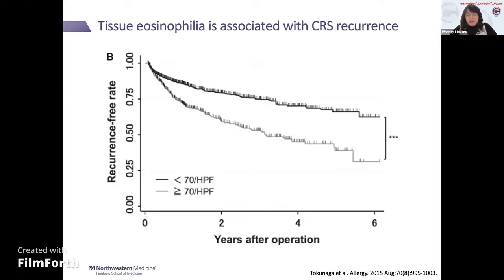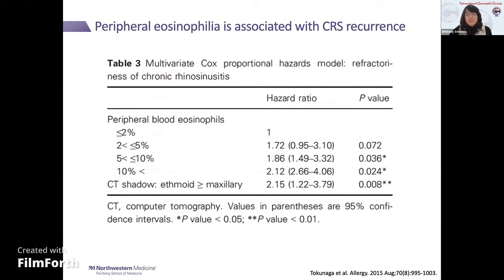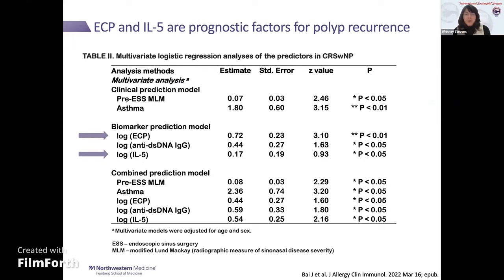A large study from Japan found that if you have greater than 70 eosinophils per high-powered field in your sinonasal tissue, you are at much increased risk of having recurrence of your sinonasal disease following surgery. So eosinophils may be a biomarker of disease recurrence. Peripheral blood eosinophils also can indicate a more likely chance of recurrence after surgery, with greater than 10% peripheral blood eosinophil level associated with the highest chance of recurrence. ECP and IL-5 are also among the factors that can predict polyp recurrence.